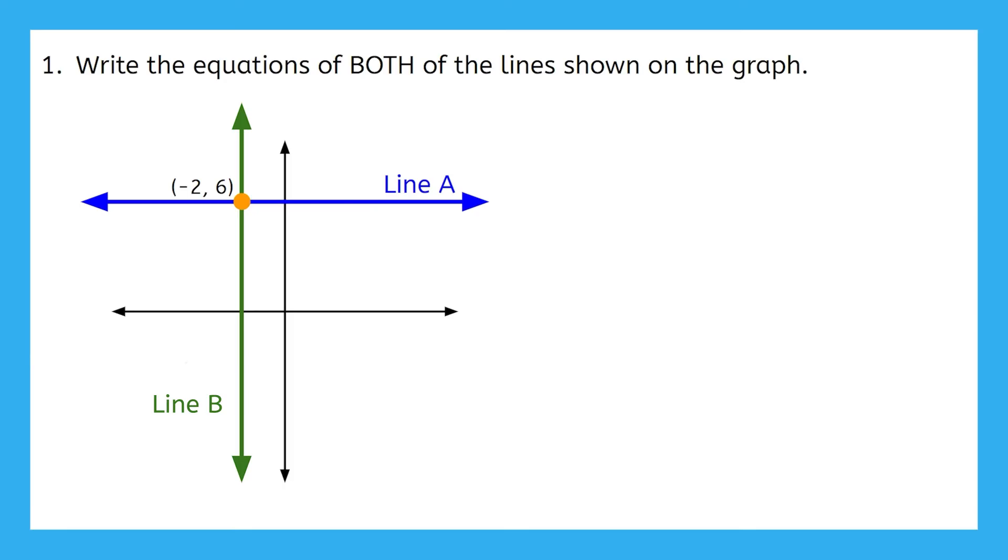Let's start with the horizontal line, line A. I can use a little bit of movie magic to make the vertical line disappear, but on paper you can just cover up the vertical line to help you focus in on one at a time. What do I know about this line so far? Well, it goes through the point negative 2 comma 6, and it's horizontal, which means its slope is 0.